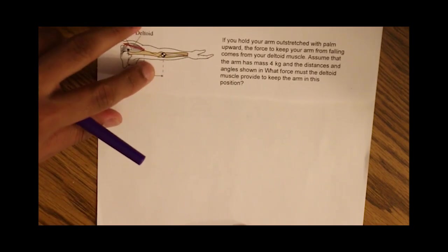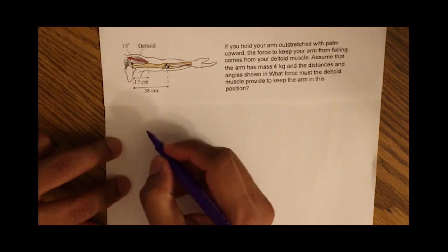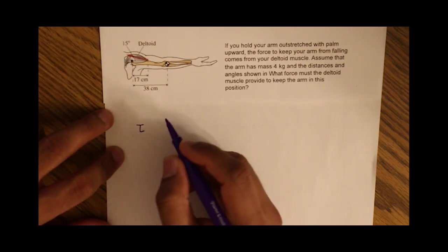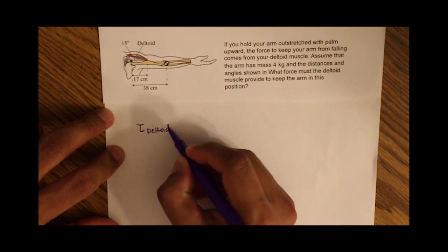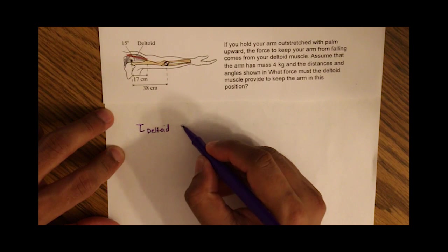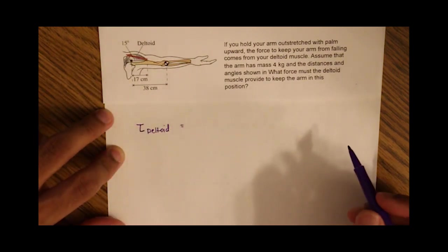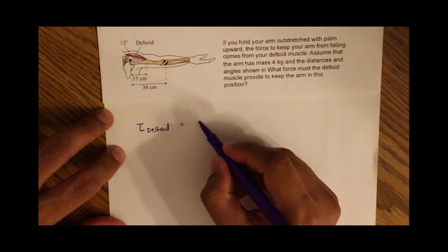So we can say torque, denoted by tau, of deltoid is equal to zero, and torque of arm is equal to zero. Both torques are equal, so we can set them equal to each other.